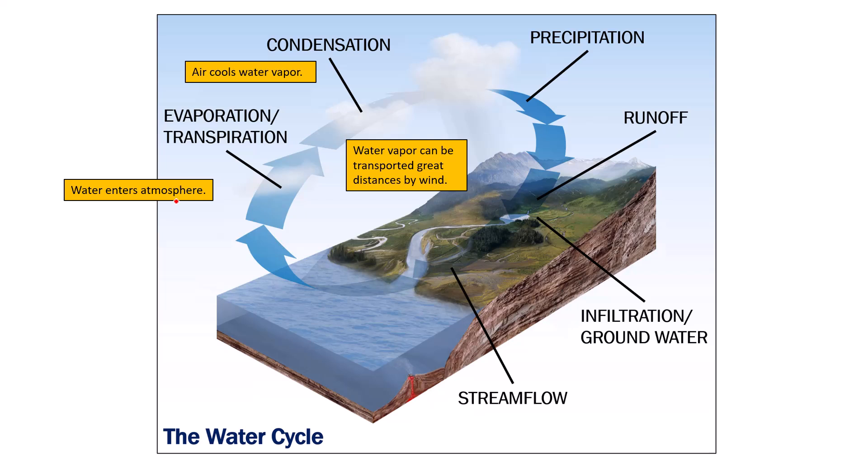Air cools the water vapor, so obviously as you go higher and higher into our atmosphere, the air gets cooler and cooler. When the water vapor gets into this really cold high atmosphere environment, it's going to condense and condense until it forms actual liquid droplets, and when those droplets become large enough, they fall as rain, snow, sleet, or hail. We call that precipitation.